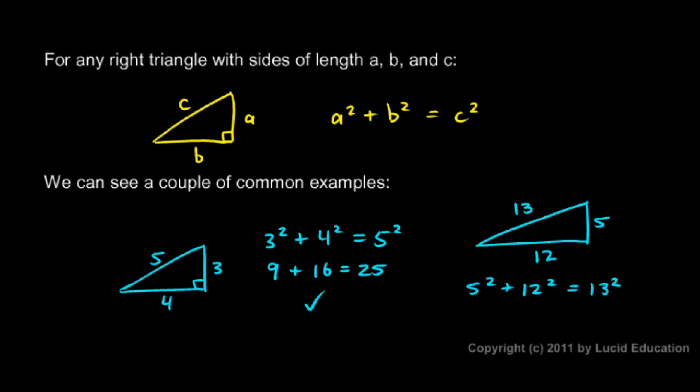And you probably know that 5 squared is 25, 12 squared is 144, and 13 squared is 169. And it turns out that 25 plus 144 does, in fact, equal 169. So that one works as well. 5, 12, 13, those three numbers are also considered a Pythagorean triple.